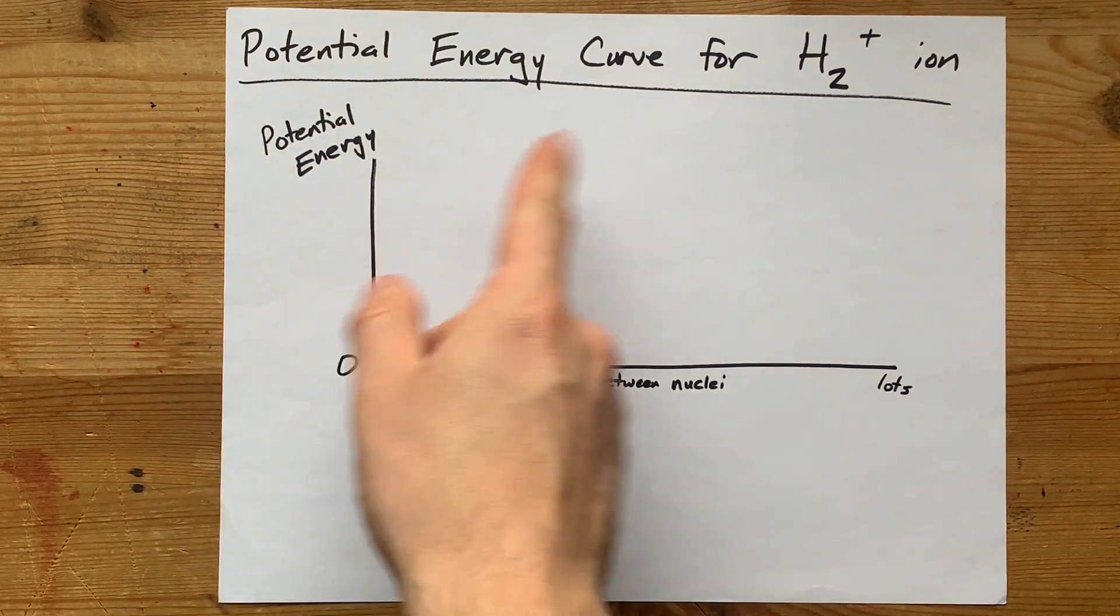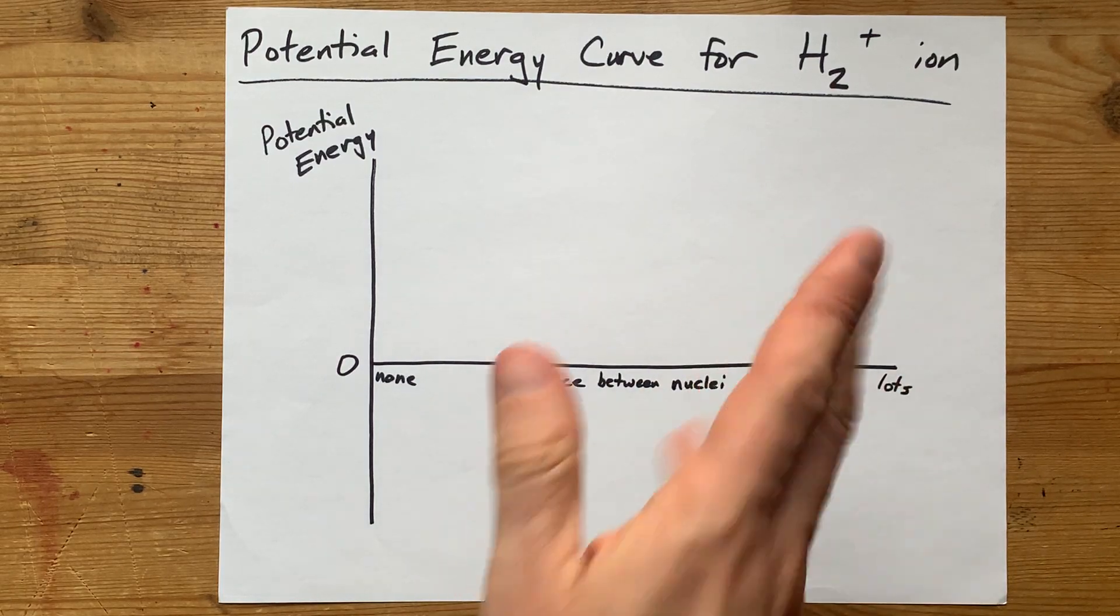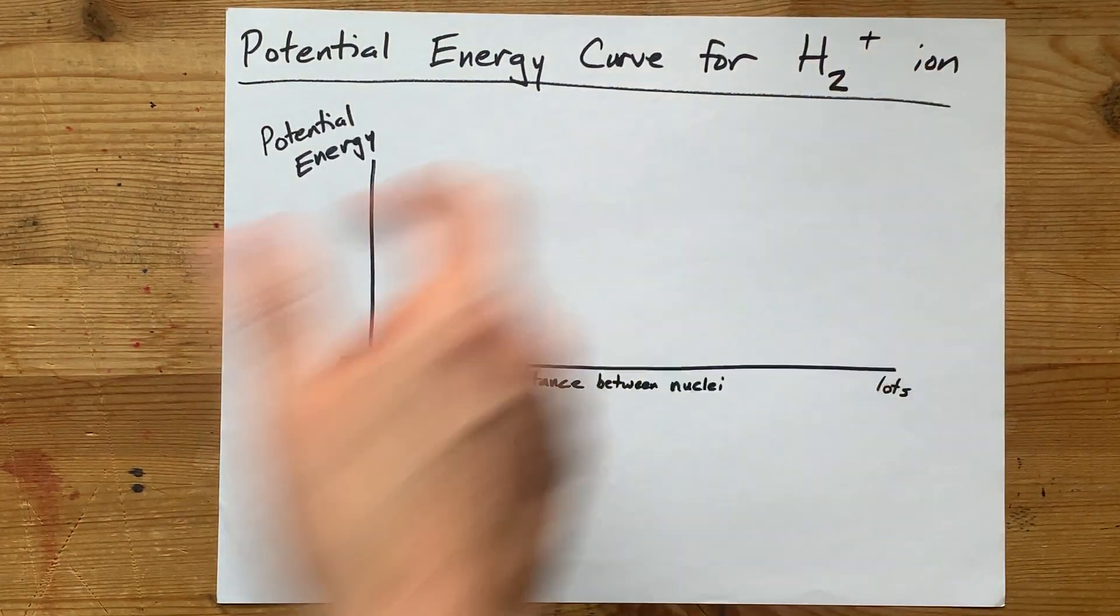How do you quickly draw the potential energy curve for, well, basically any molecule, but the one kids get asked about most is the H2 plus ion.